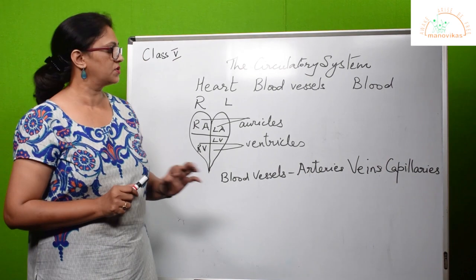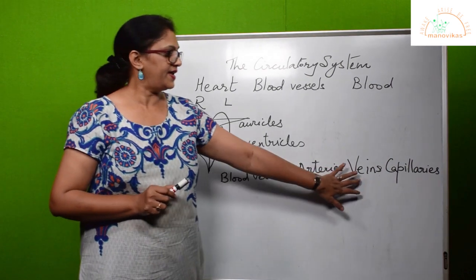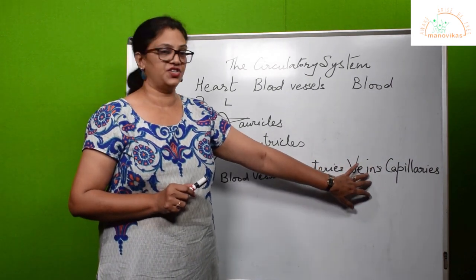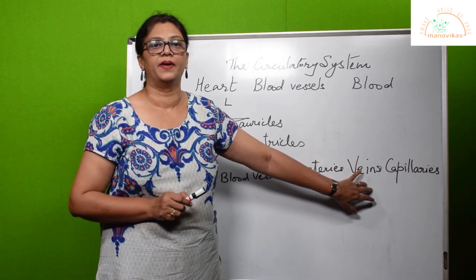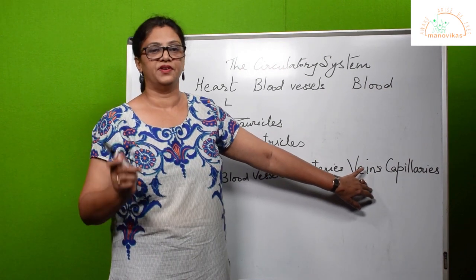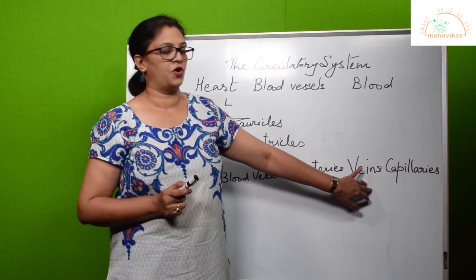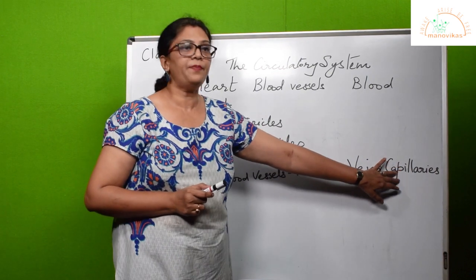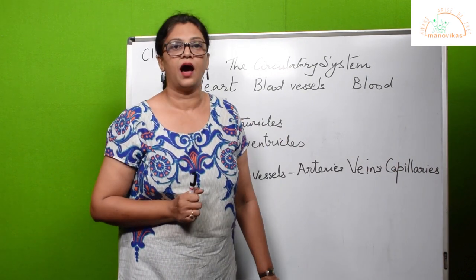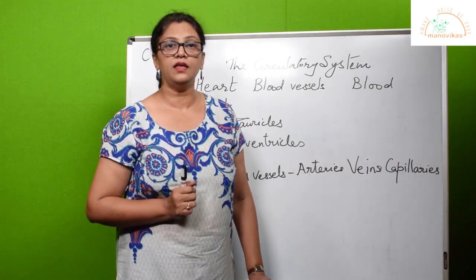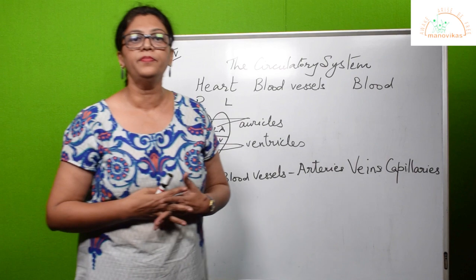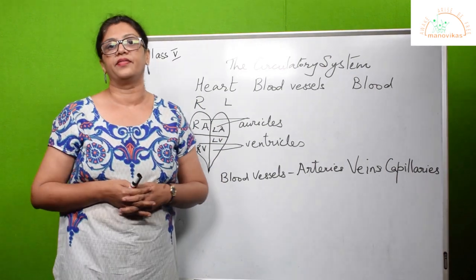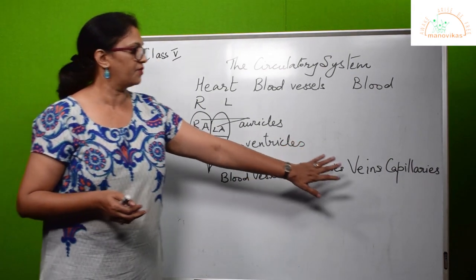Arteries have thick walls. Veins carry deoxygenated blood, that is impure blood, from the different parts of the body back to the heart. Capillaries are thin-walled blood vessels that form the connections between the arteries and the veins.